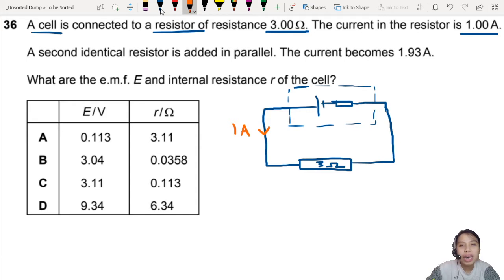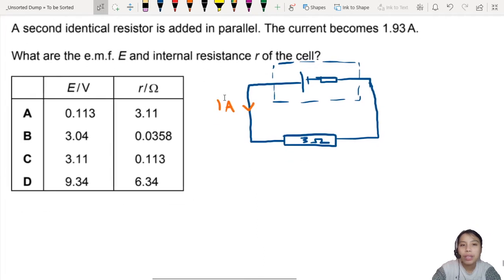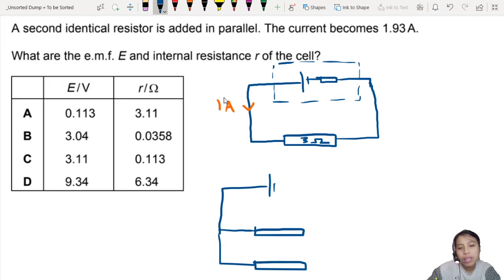Second identical resistor is added in parallel. So there's a change in circuit. So that's the original one. Now we add another one. So let's draw another circuit. In parallel, the current becomes 1.93 amps. Now the thing that I'm not sure is, is this 1.93 the current through the resistor or current through the whole battery? There's a difference there.